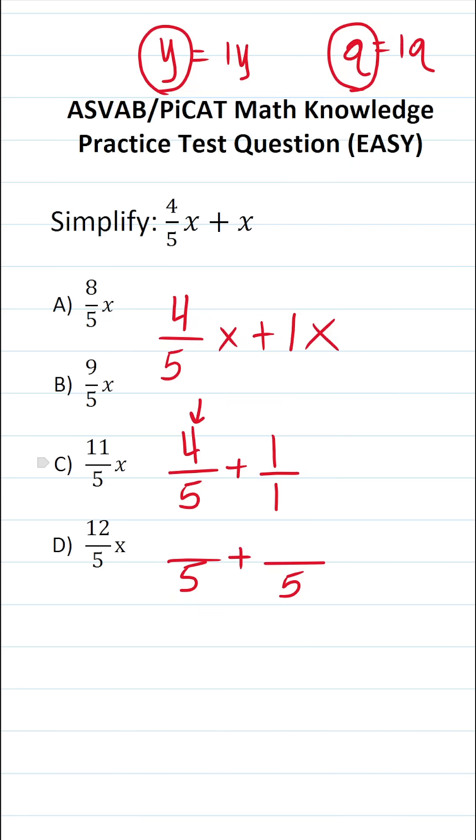The fraction four-fifths already has a denominator of five, so I'm just going to copy it down as is. To write one with a denominator of five, I'd have to multiply it by five, and also do that to its numerator. One times five is five. So this becomes four-fifths plus five over five.